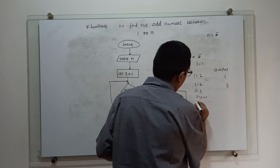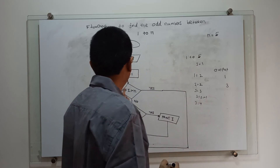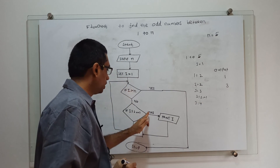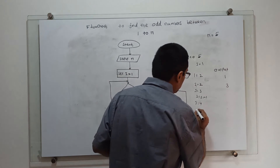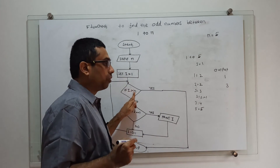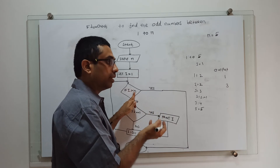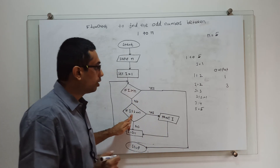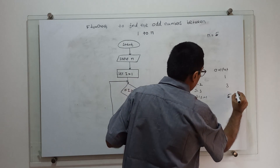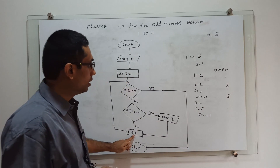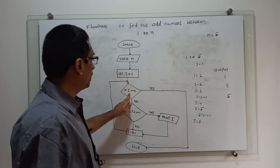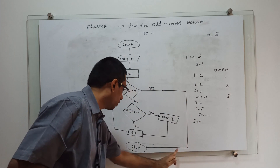i becomes 4. Check 4 greater than 5 — no. 4 modulo 2 equals 0, so no print. Simply increase the value; i becomes 5. Check 5 greater than 5 — no, 5 is not greater than 5. Then 5 modulo 2 equals 1, so it prints 5. Now i equals i plus 1, i becomes 6. Check 6 greater than 5 — yes. The flowchart comes to the stop; the flowchart ends.